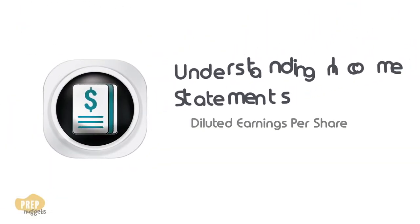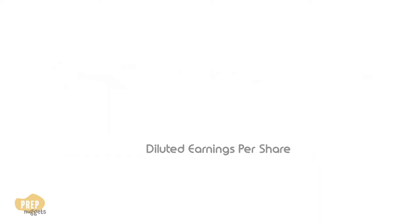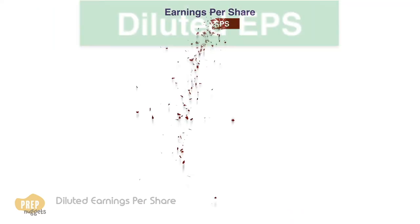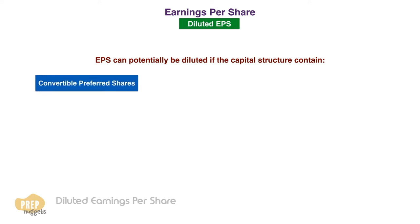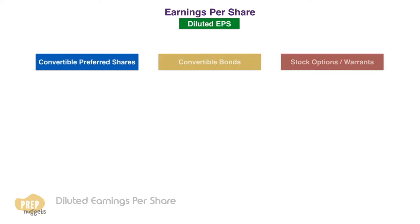With basic EPS as the foundation, we now proceed to diluted EPS. A company's earnings per share can potentially be diluted if the capital structure contains convertible preferred stock, convertible bonds outstanding, or stock options or warrants.